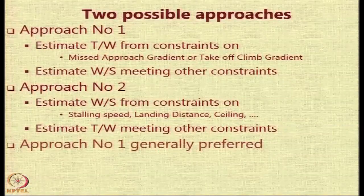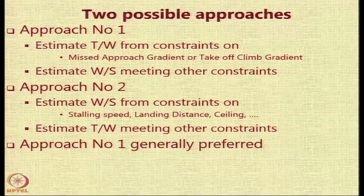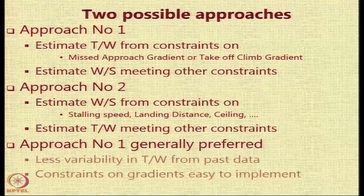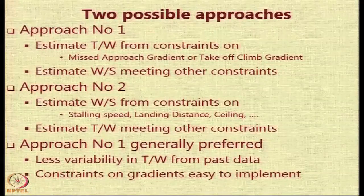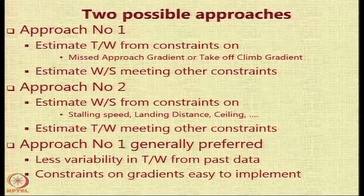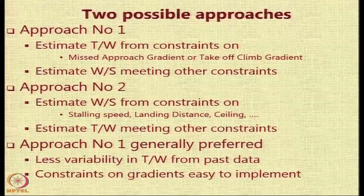However, approach one — fixing the thrust-to-weight ratio first — is generally preferred. One reason is that past data shows the variability in thrust-to-weight ratio for a particular aircraft type is lower; most aircraft of a given type have thrust-to-weight ratios within a small band. Secondly, the constraints on missed approach gradient and takeoff climb gradient are very easy to implement compared to the other constraints, as we will see very soon.